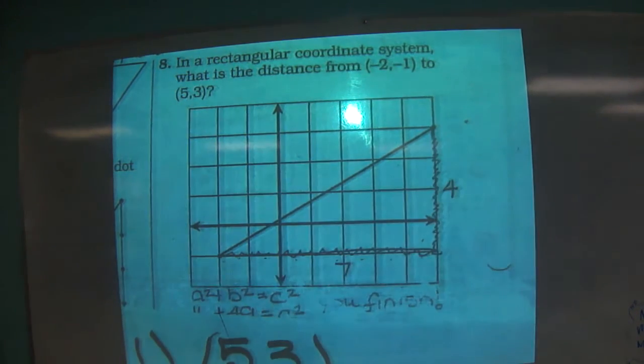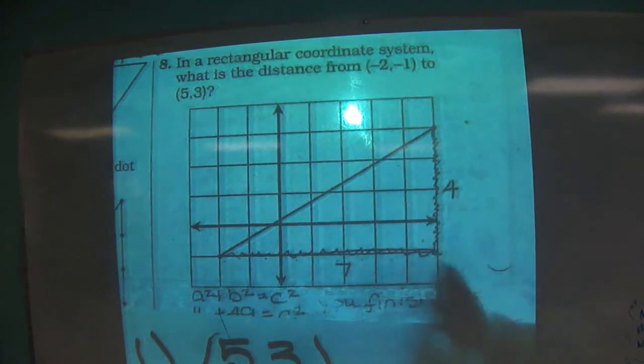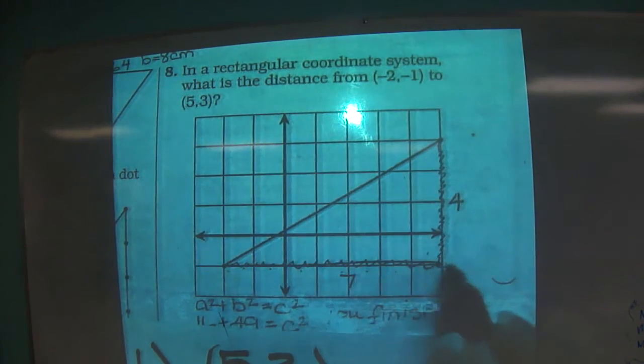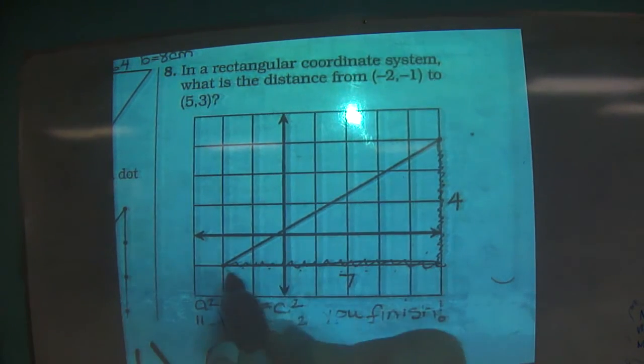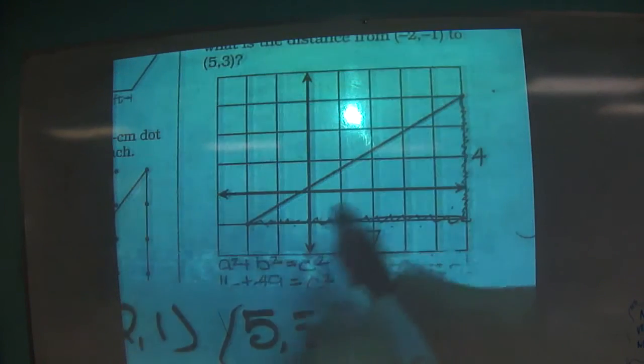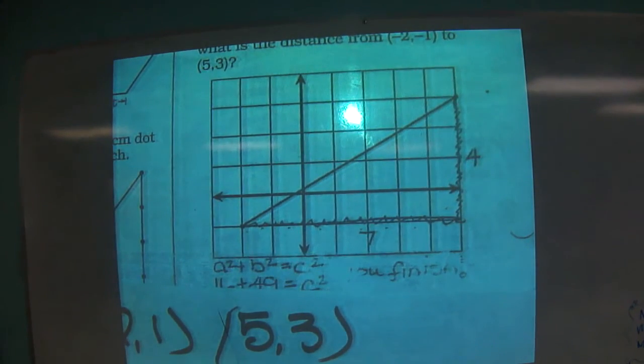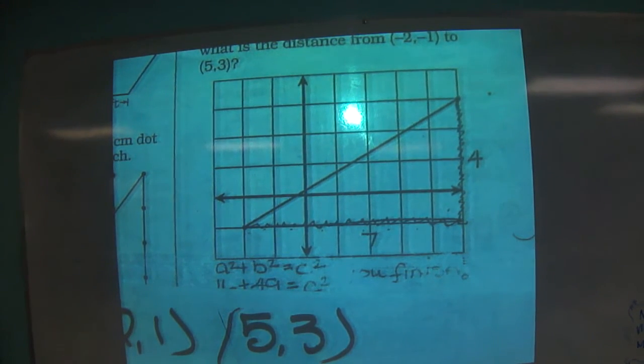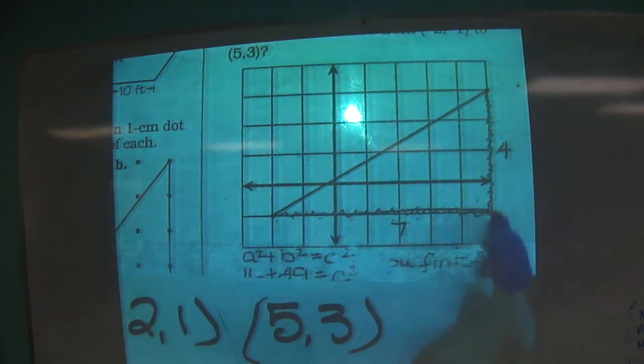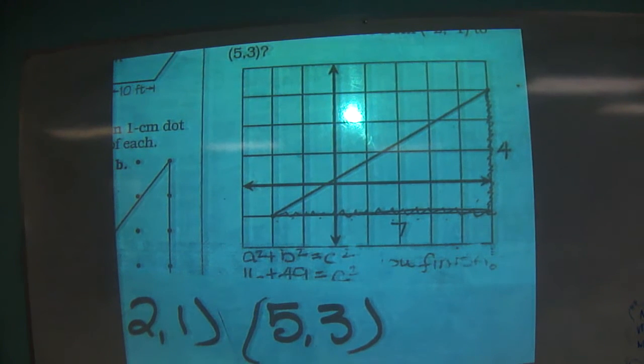So in drawing the rest of the triangle, and I drew little squiggly lines here, I drew down 4 and over 7. So by doing that, I now have two legs of my right triangle. Because whenever we drew those lines for slope, didn't we make a right triangle?